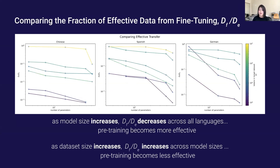Another way to think about the usefulness of pre-training data is to look at the fraction of effective data for fine-tuning. A smaller fraction means pre-training has helped more. As model size increases, this fraction decreases across all languages, meaning pre-training becomes more effective. But as we increase dataset size, this fraction increases across model sizes, meaning pre-training becomes less effective. The German graph has steeper curves compared to Spanish and Chinese, indicating more transfer is happening for German.